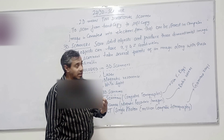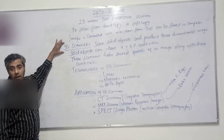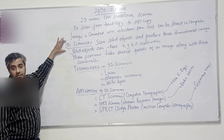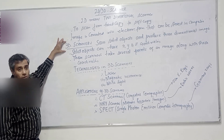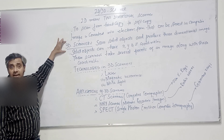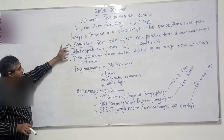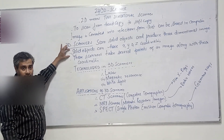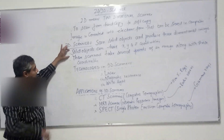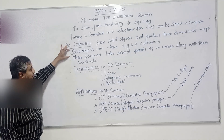Once you have scanned the objects, that will be stored. The output document or image is called a CAD document — Computer Aided Design. So solid objects are scanned through it and then you can print them out through the 3D printer.